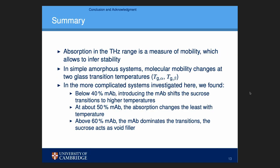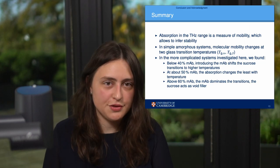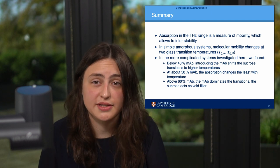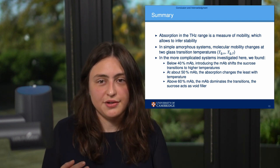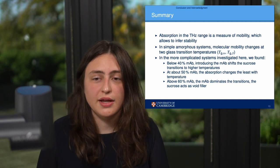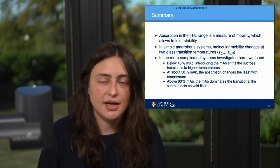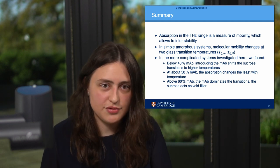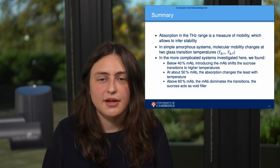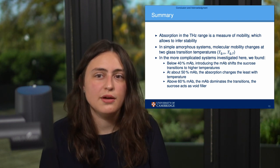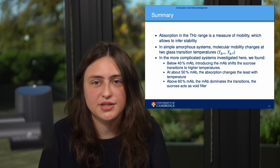So terahertz spectroscopy is a measure of mobility, which is very useful because we can use it to infer stability. In amorphous systems — even very simple ones like pure sucrose — the molecular mobility changes at the two glass transition temperatures. As we increase the amount of protein in the samples, we shift these transitions to higher temperatures.